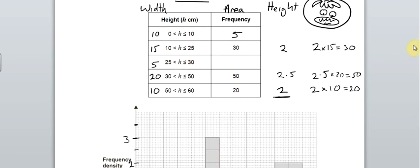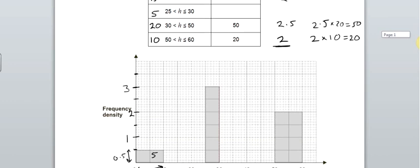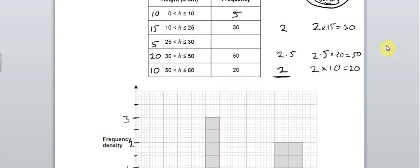And this one here has got a width of 5. That's the third one along. That is the 25 to 30. And it's got a height of 3. So height of 3, width of 5, that must mean the area is 15.